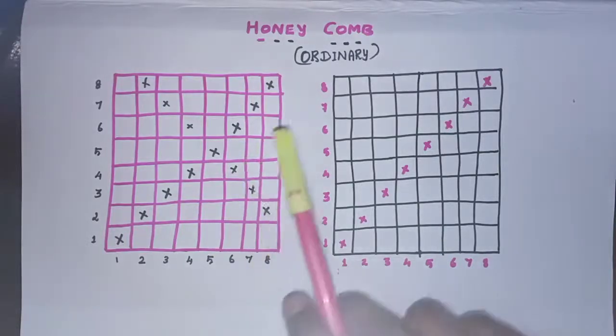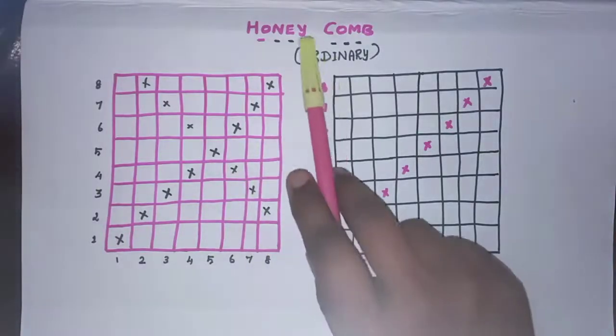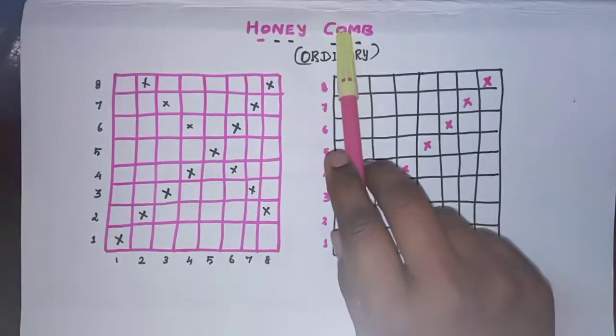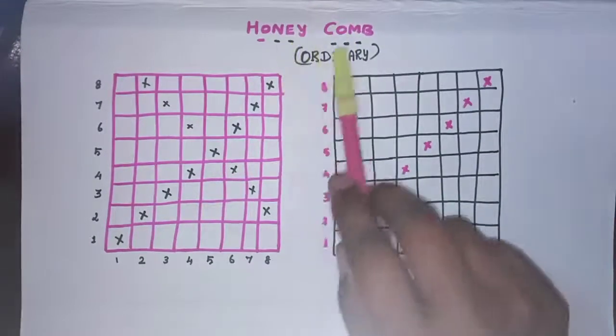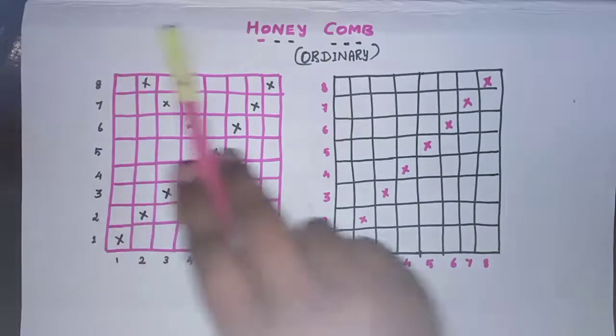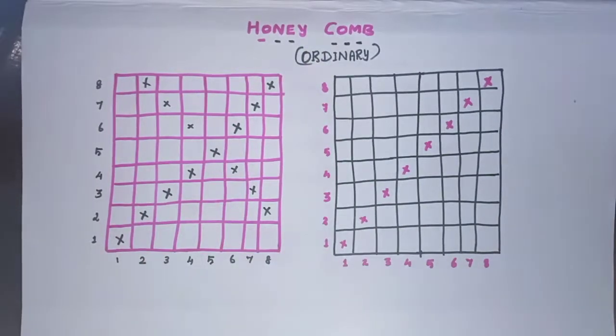Okay students, so now we are going to see how to weave ordinary, how to design the ordinary honeycomb weave. First you have to draw 8 by 8, that means 8 wire, 8 left box.